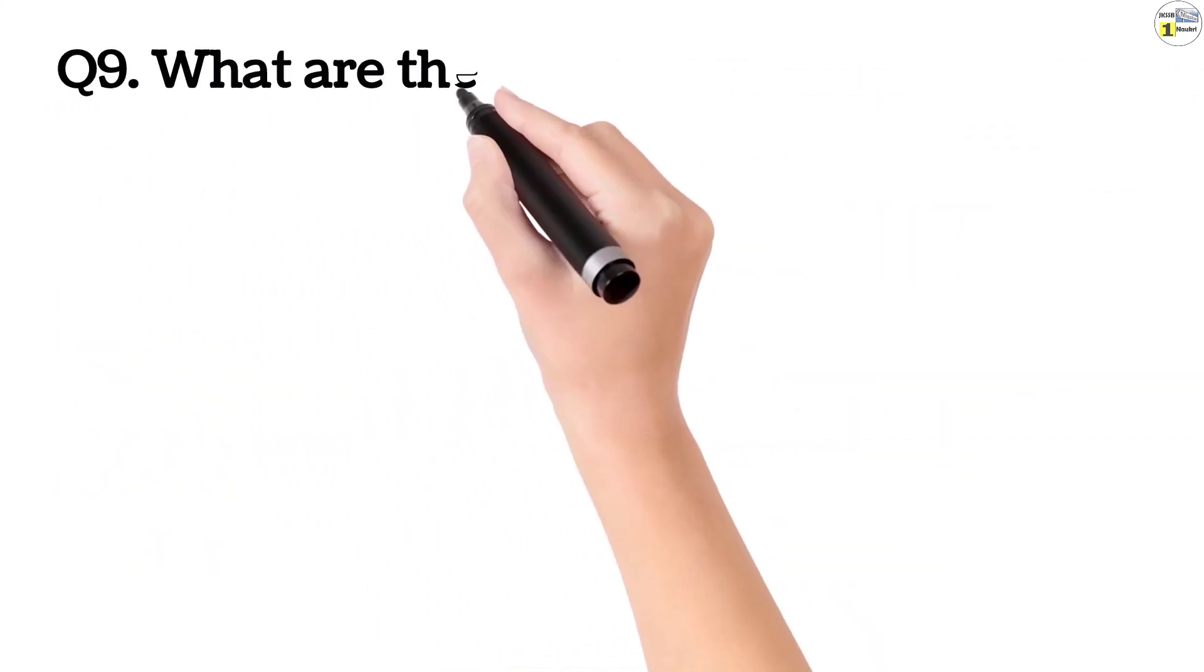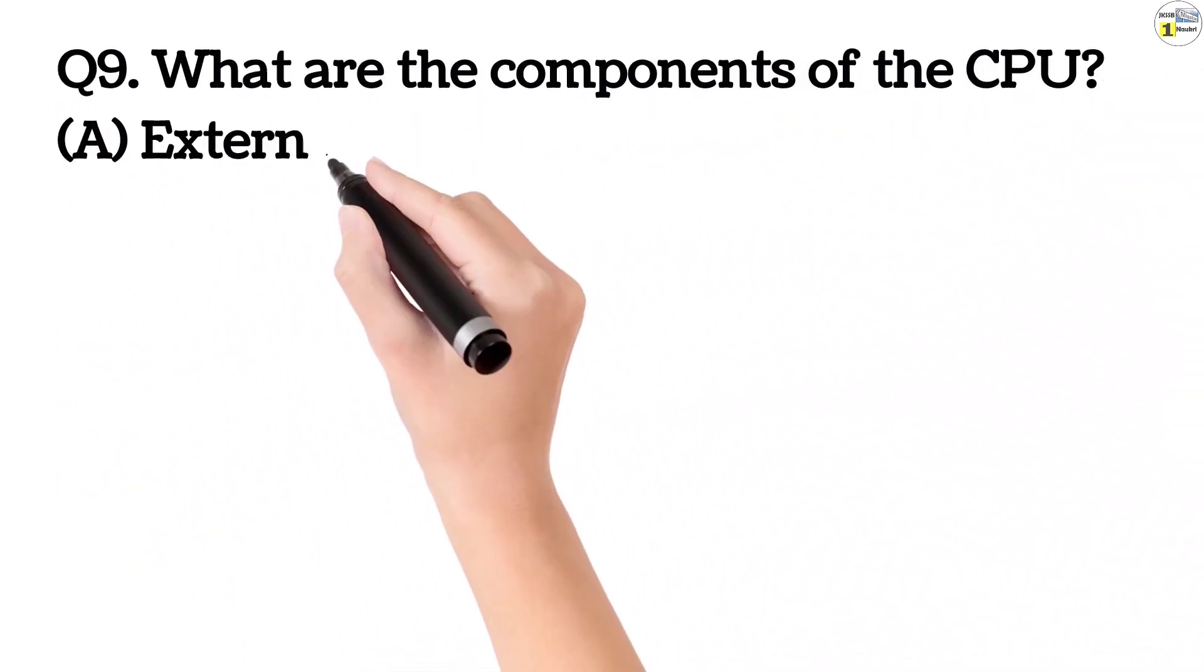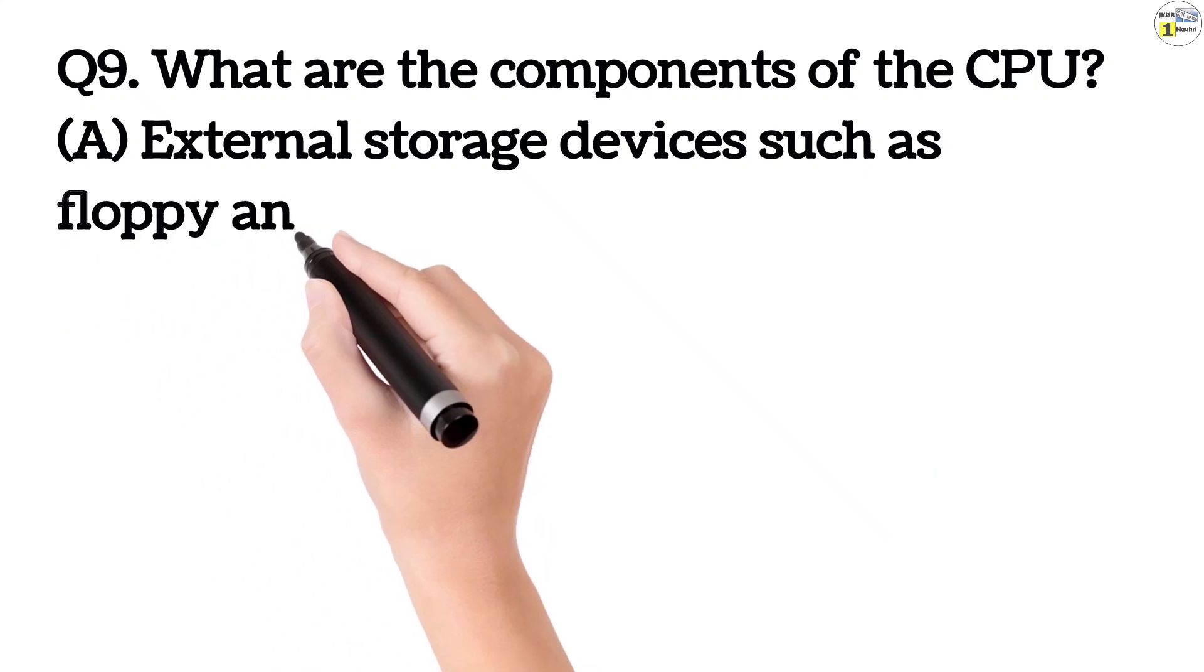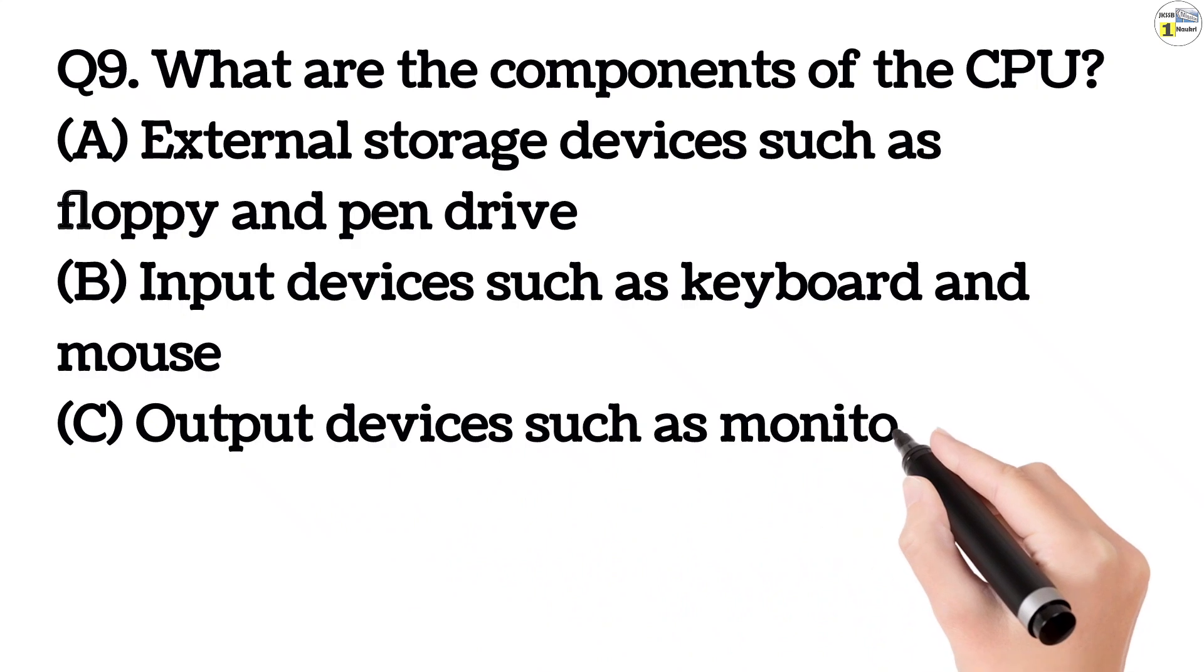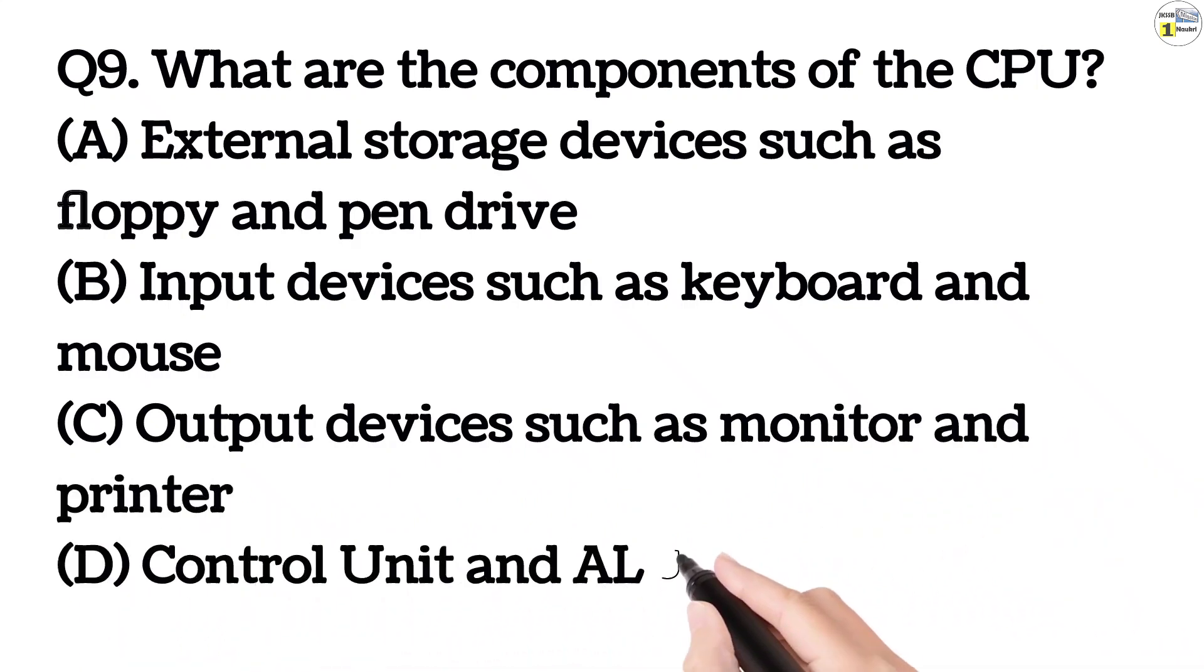Question number 9. What are the components of the CPU? Option A, external storage device such as floppy and pendrive. Option B, input devices such as keyboard and mouse. Option C, output devices such as monitor and printer. Option D, control unit and ALU.